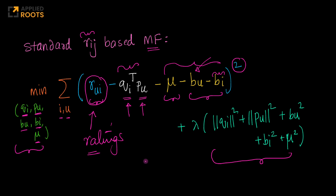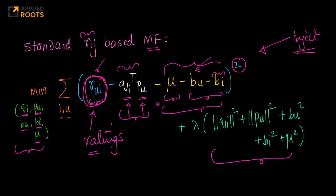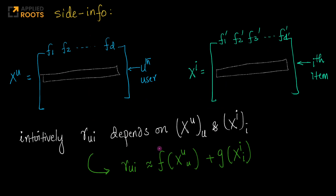Here we are not using any side information. Given this formulation, our objective is to somehow incorporate or inject the side information into it. The side information is present in two matrices. One matrix is X superscript u — let's assume there are d features for every user. This X^u is basically the matrix of all side information features like gender, age, income, whether somebody is a prime customer or a premium customer, and all those details. Every row here corresponds to the uth user's data.